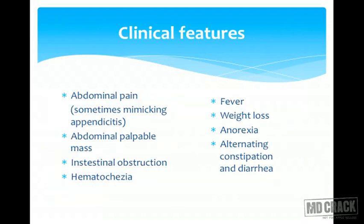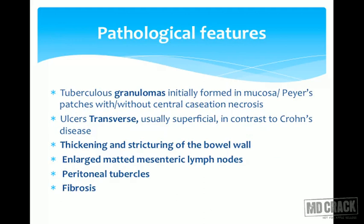The clinical features of abdominal tuberculosis include abdominal pain, a palpable mass in the right iliac fossa, intestinal obstruction, and hematochezia or fresh blood in stools — these are the local GI symptoms. Systemic symptoms such as fever, weight loss, and anorexia are also seen. The hallmark pathological feature is the granuloma, usually a caseating granuloma, but it can be non-caseating as well.